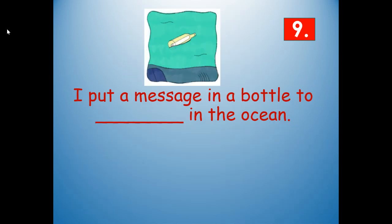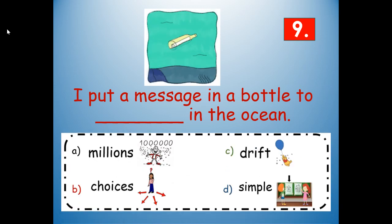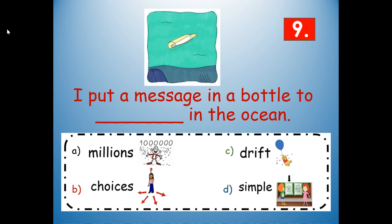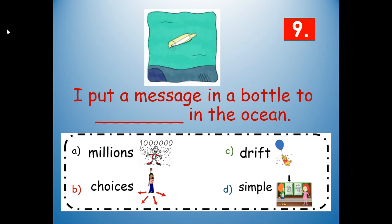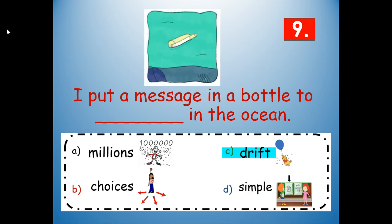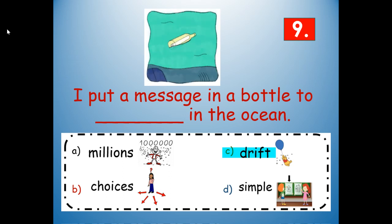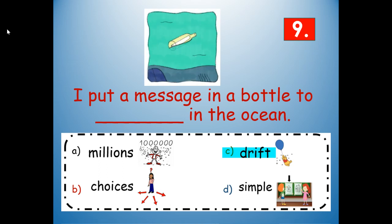Number nine: I put a message in a bottle to blank in the ocean. Would it be millions, choices, drift, or simple? Look at your picture clue and where the word is in the sentence. Drift. The bottle is drifting — to drift means to float. I put a message in a bottle to drift in the ocean. D-R-I-F-T.